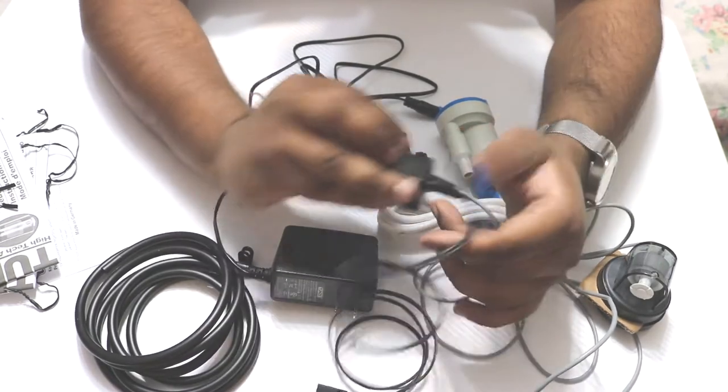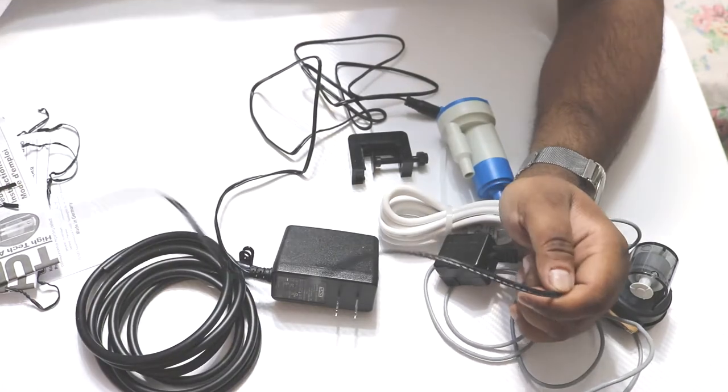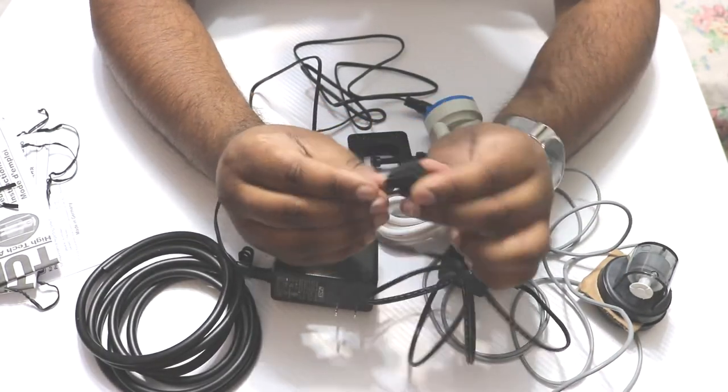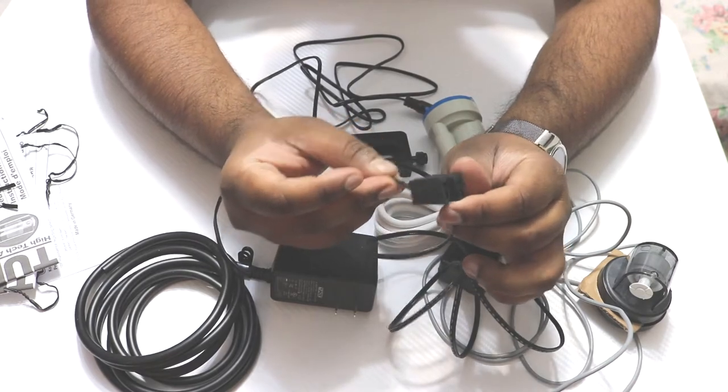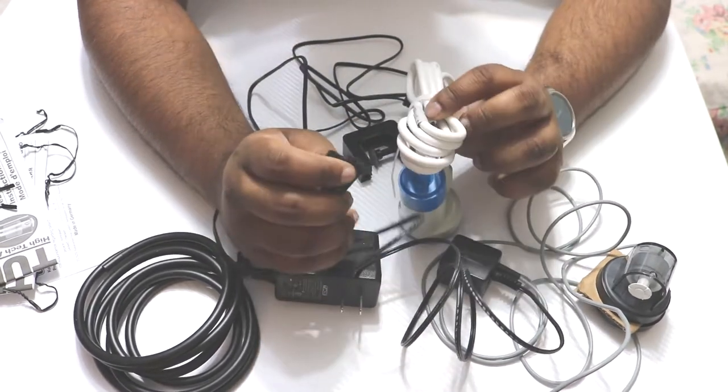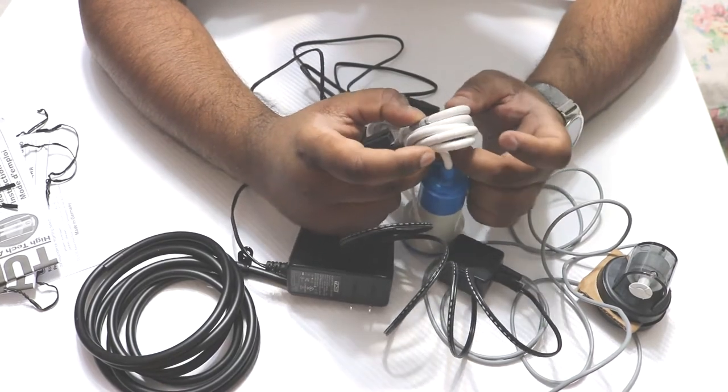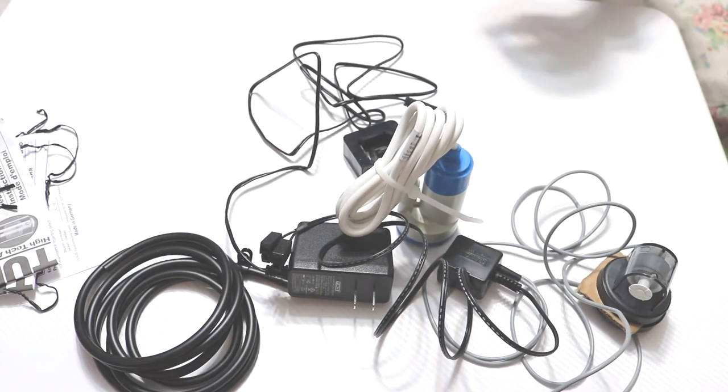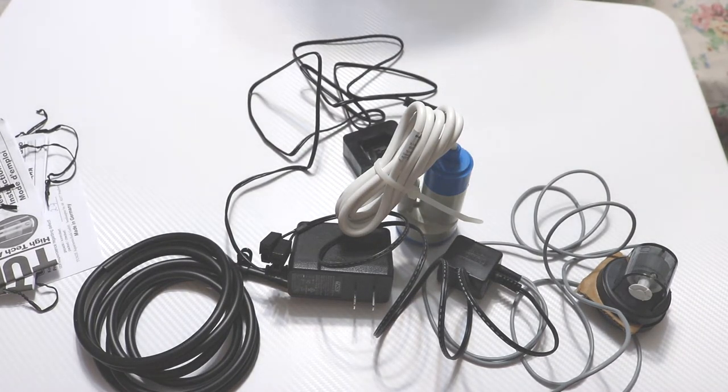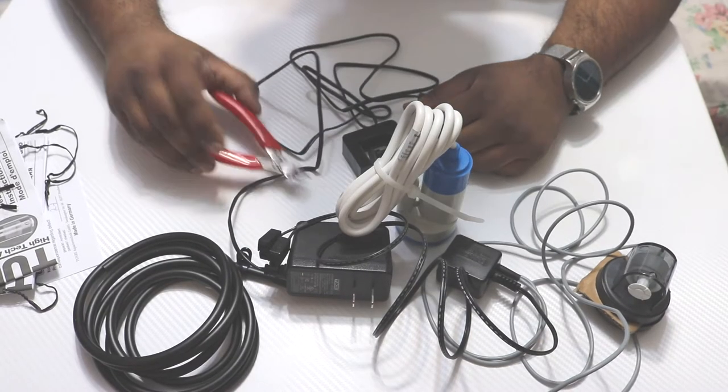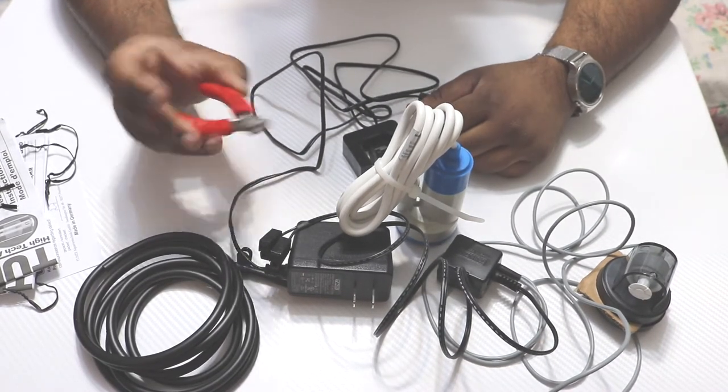And then this controller has these two modules. I'm going to have to see where these modules go. I'm assuming, yes. So let me get a cutter so I can cut this zip tie and show you guys exactly what's going on. Okay, we're back. I got my zip tie cutter.